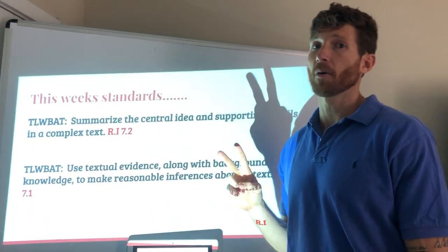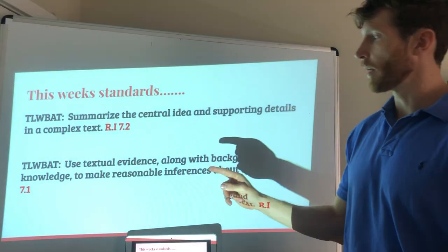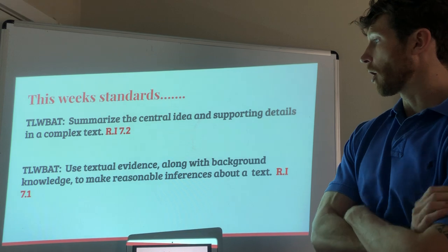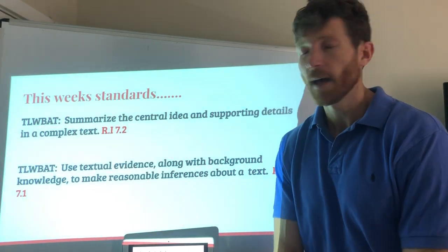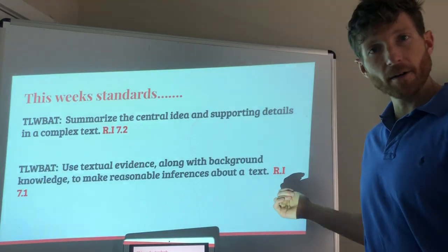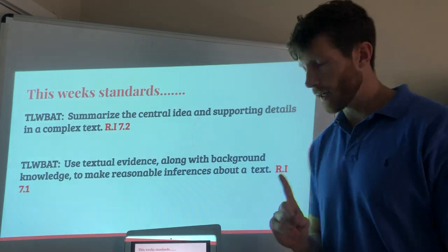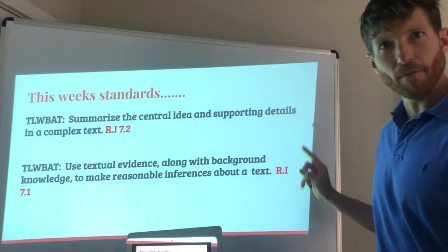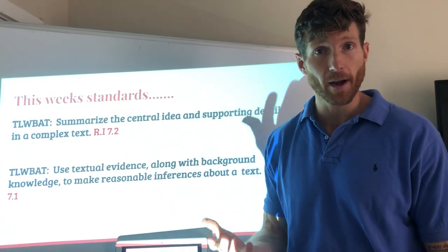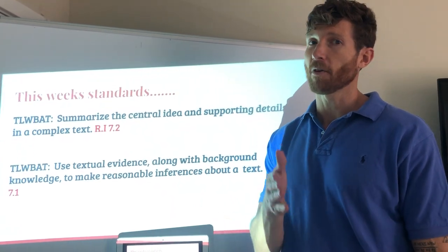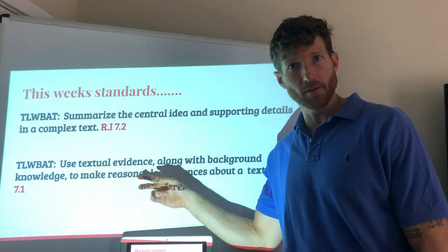The second standard we're going to be working on is RI 7.1 — use textual evidence along with background knowledge to make reasonable inferences about a text. We've covered this standard in depth with literature. What's different this week is we're going to be looking at informational text, which is generally a little bit more complex, and we're really going to have to focus on those close reading skills in order to properly use textual evidence.